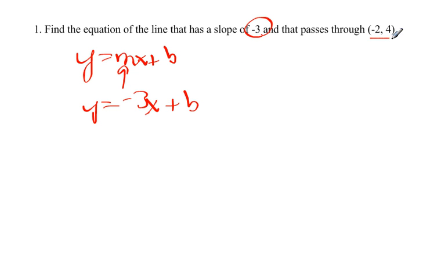And then it passes through a certain point. This is always x comma y, so since this point solves the equation, we can use that point to find the b.